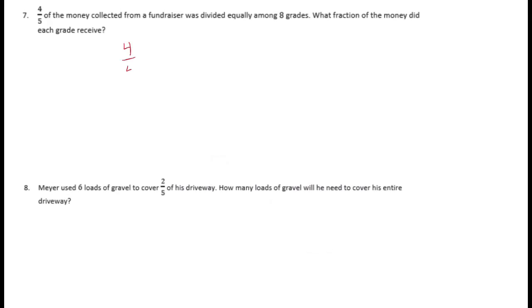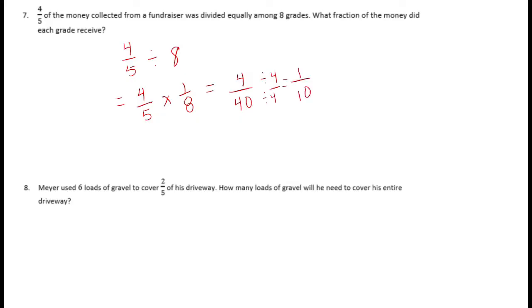Number 7: 4/5 of the money collected from a fundraiser was divided equally among 8 grades. What fraction of the money did each grade receive? We have 4/5 divided equally among 8, which is the same as 4/5 times 1/8, giving us 4/40. Reducing by dividing both by 4, we get 1/10 — so each grade received 1/10 of the money.